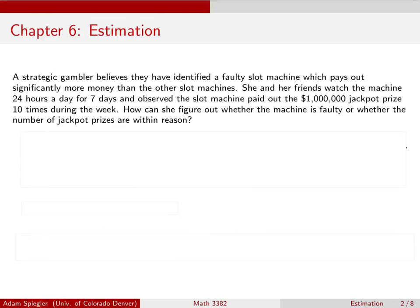Okay, so in the previous example, we thought about a biologist that was collecting samples of cubs, black bear cubs. So now we're all taking statistics. So let's imagine here we're going to take our talents on the road to a casino. And so let's say a strategic gambler thinks that they have identified a slot machine which pays out more than it should. So it pays out more money than the other slot machines. So how can they come up with a way of gauging whether that is so?